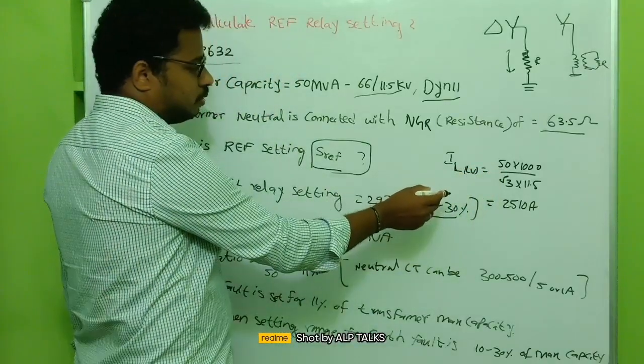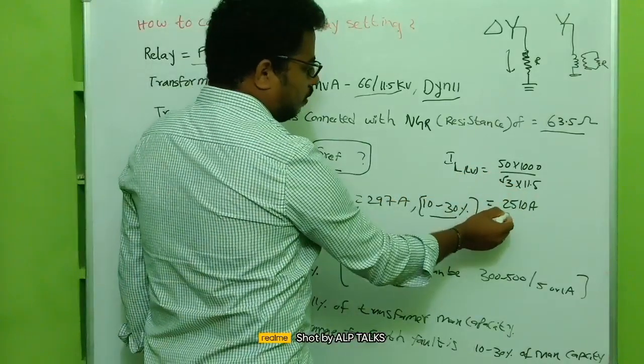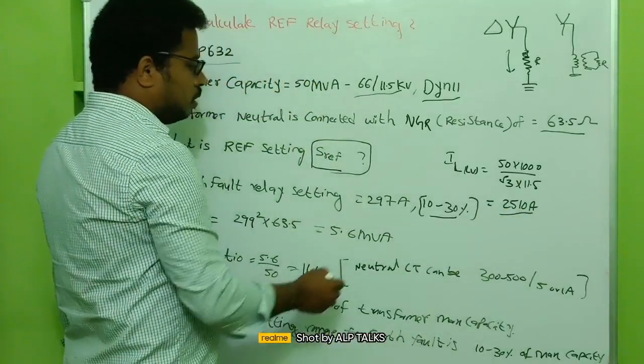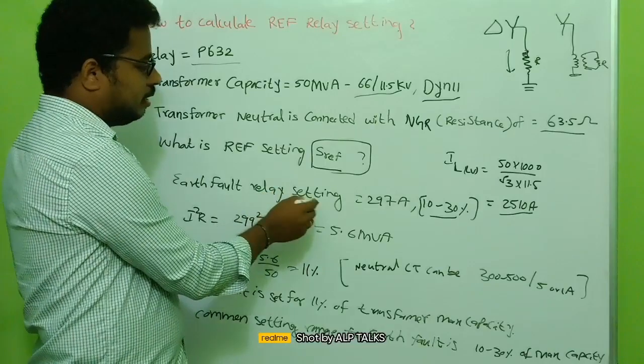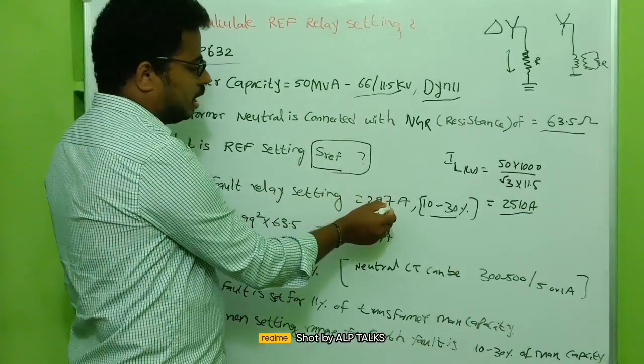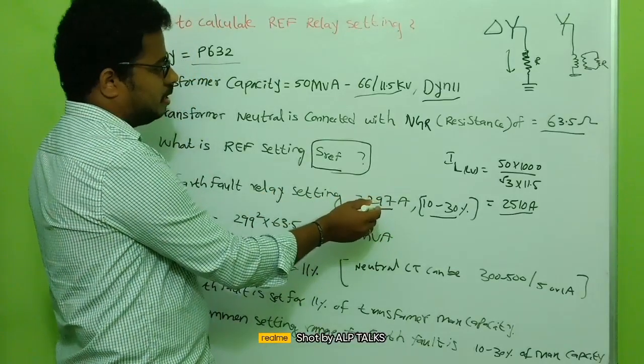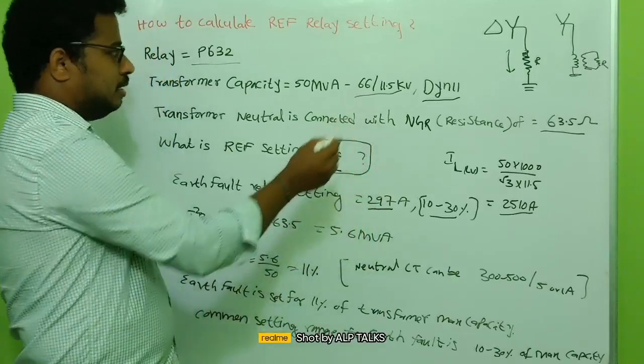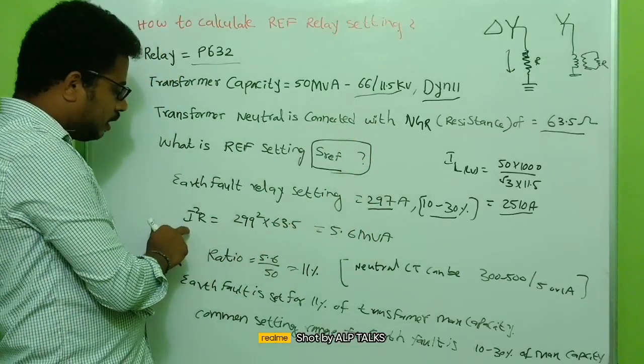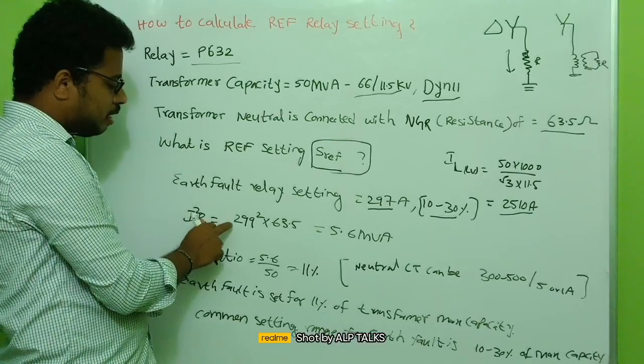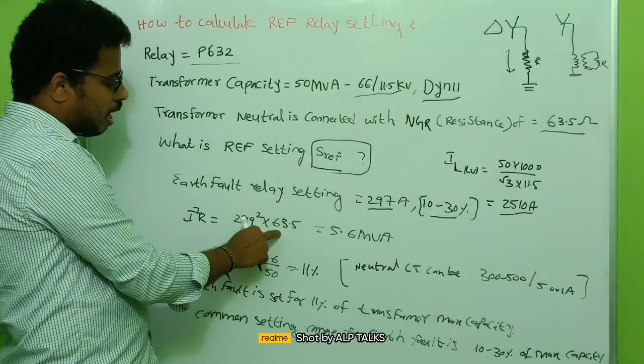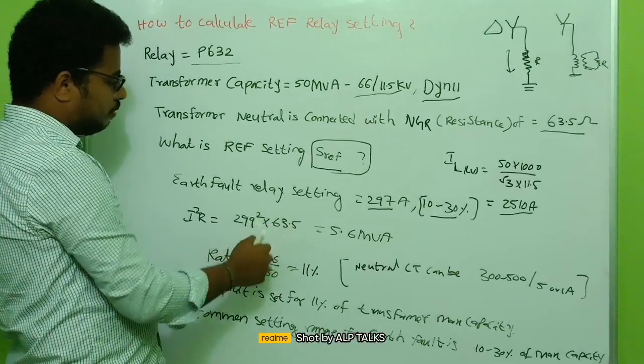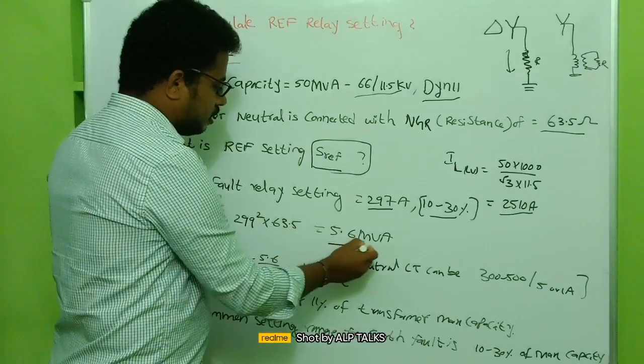50 times thousand by root 3 times 11.5, so you will get 2510. So generally 10 to 30 percent will be the fault relay setting. Let's take 297 ampere. 297 ampere, in this case they took 297 ampere. Let's calculate I square R, so here the I square R is nothing but 297 ohm square into the resistance we have, which is 63.5.